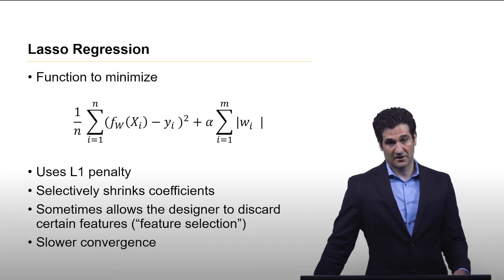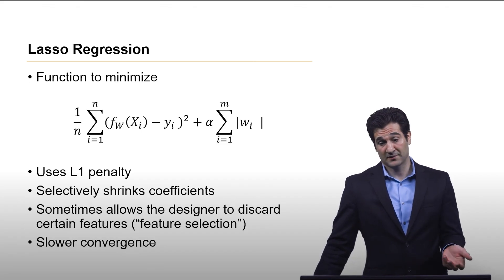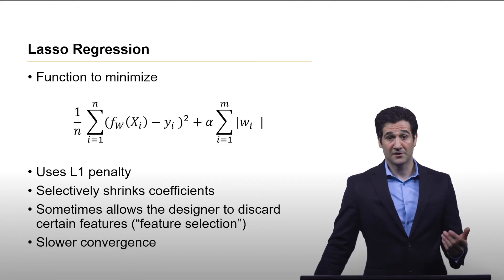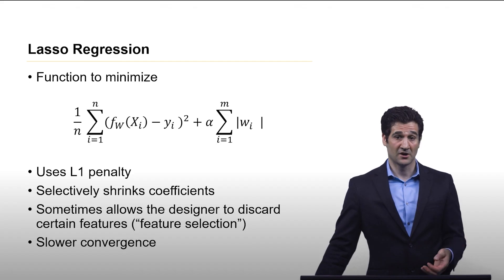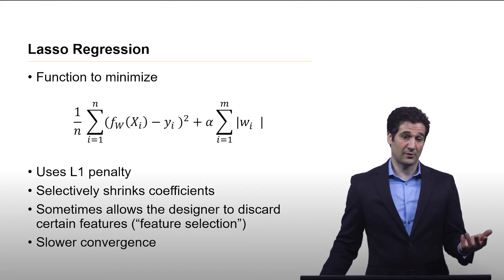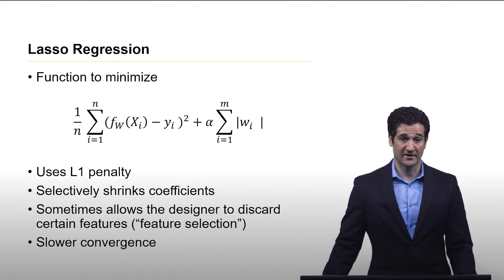It'll actually end up reducing the weight so much, in some cases even to zero, where it'll allow you to discard features altogether because once that weight is zero in a regression problem you might as well not even have that feature.